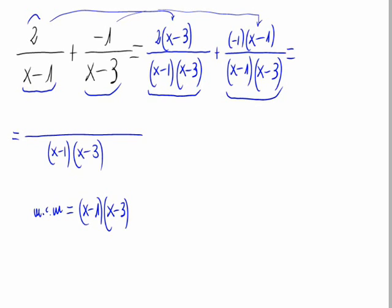And the numerator, multiplying this, we would have 2 times x minus 2 times 3 is minus 6. And minus 1 times x is minus x. And minus 1 times minus 1 is plus 1.